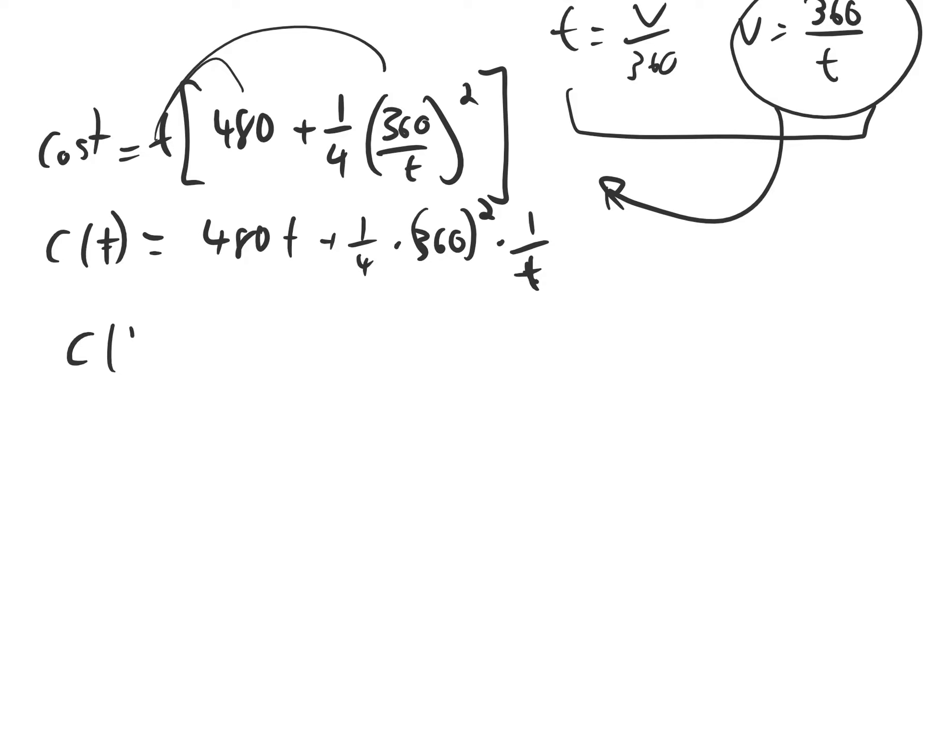To take the derivative, it'll be helpful for me to rewrite 1 over t as t to the negative 1, to make it more obvious how to use the power rule, how to apply the power rule in this case.